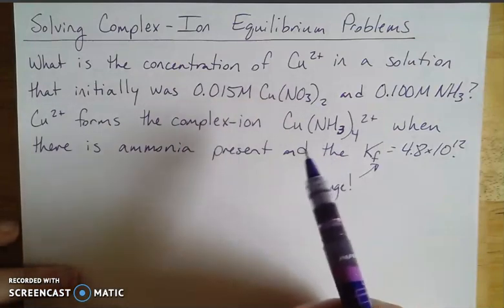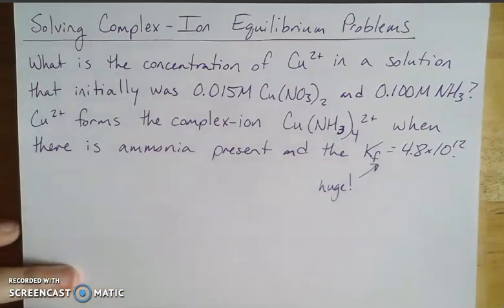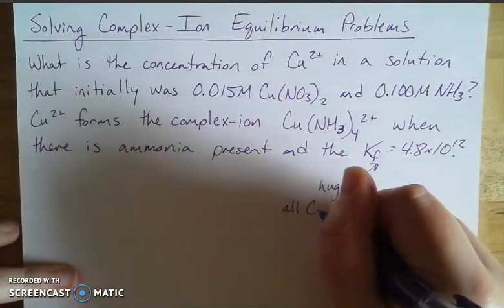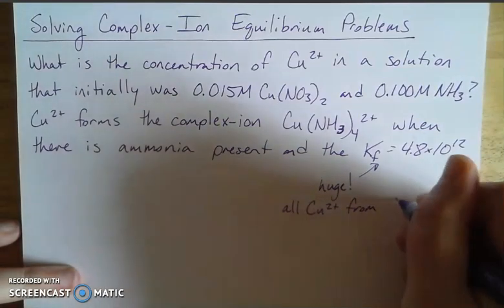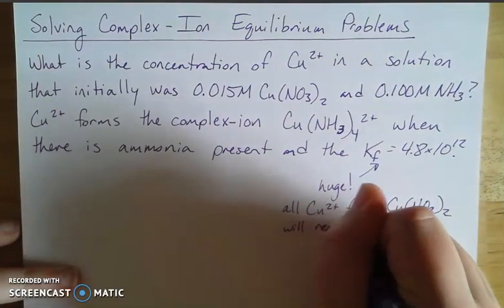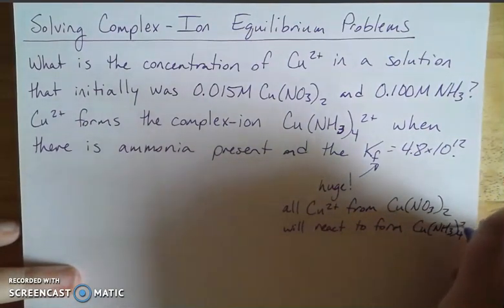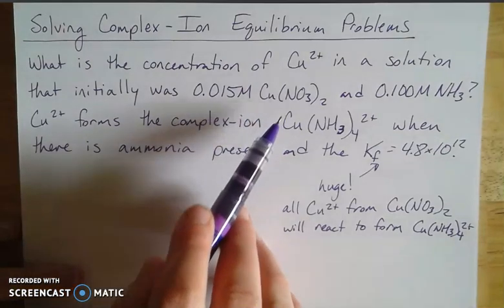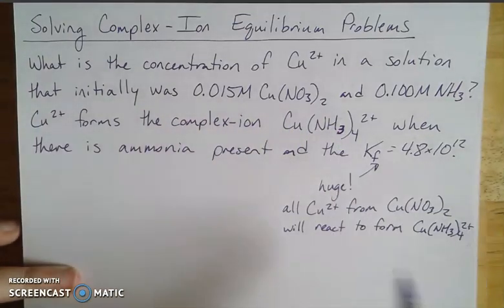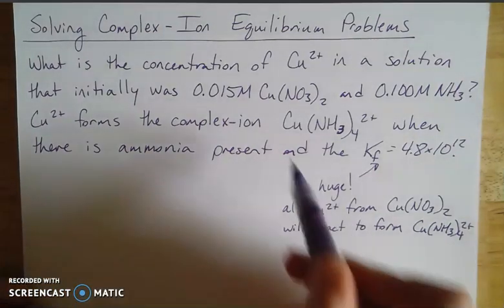This tells me that this ion really likes to be a thing. So what we can assume based on this value, because it is so big, is that any copper ions that I have in my copper nitrate, all of my copper from my initial copper nitrate will react. And it's going to react to form that complex ion. So it likes to be that ion, it's going to form that ion. Nitrates in general are really soluble, so the nitrate's going to be hanging out in solution, not doing anything. But those copper ions that are freed up are going to form the copper complex.